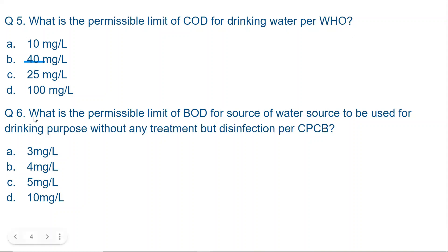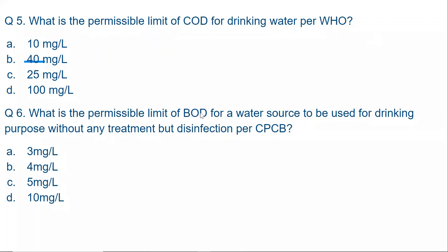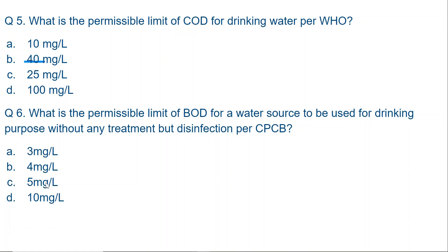Question six: What is the permissible limit of BOD for a water source to be used for drinking purpose without any treatment but disinfection, according to the Central Pollution Control Board? The options are 3, 4, 5, or 10 mg per litre. The correct option is 5 mg per litre. According to the CPCB, if the BOD of any water source is up to 5 mg per litre or less, that water can simply be disinfected and supplied — it does not need detailed treatment.